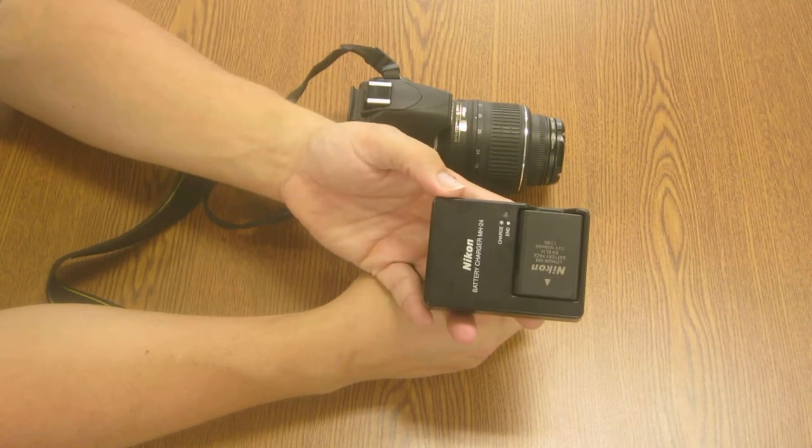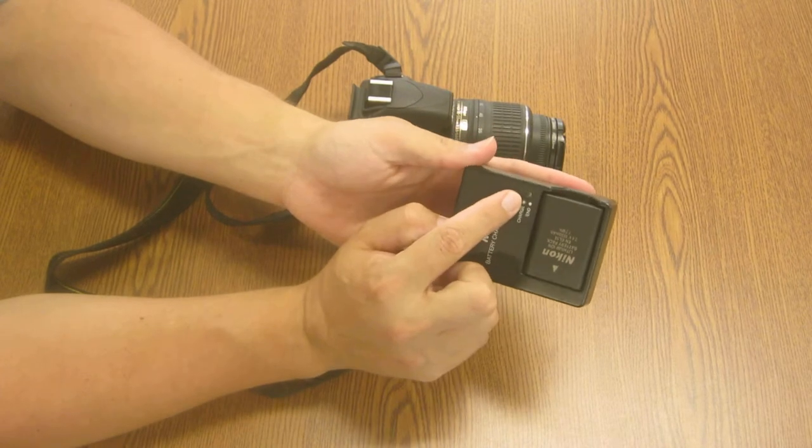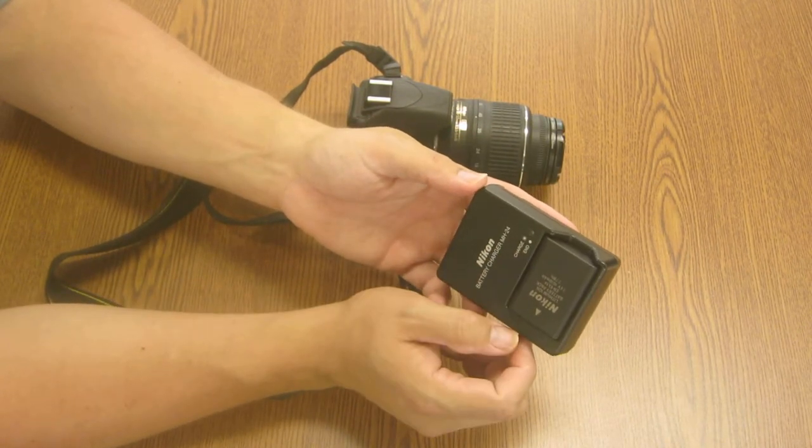These are quick chargers, so it only takes about a half an hour for them to charge your battery. The light will blink orange as it's charging. When it's done, it'll go to a solid orange.